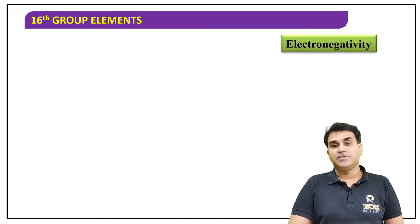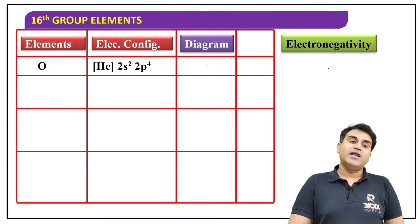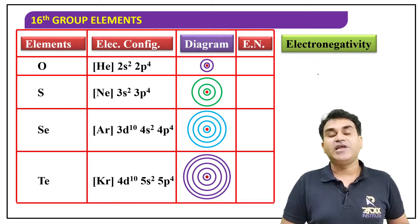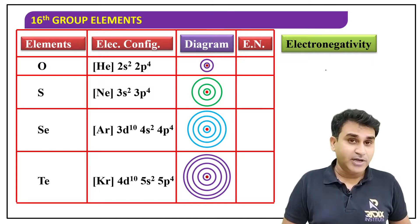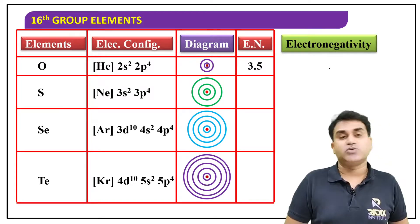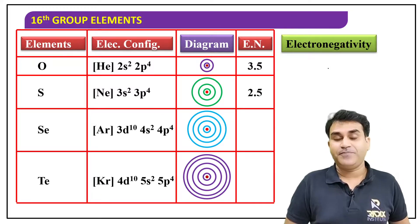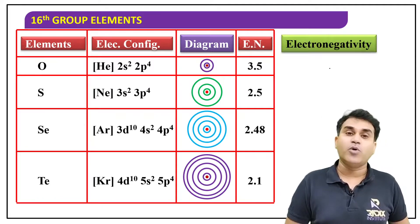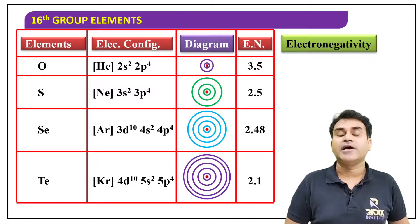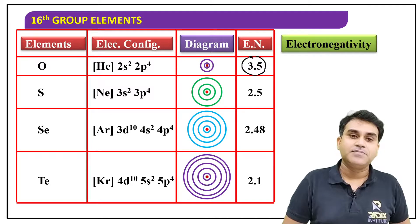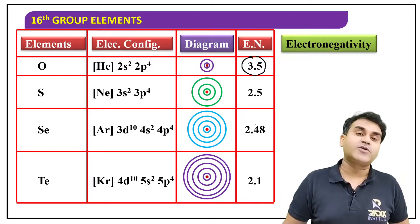Due to half-filled orbital stability. Electronegativity values: down the group, size increases so electronegativity decreases. Oxygen's electronegativity is the second highest in the entire periodic table at 3.5. After that, a sharp decrease to sulfur at nearly 2.5. Selenium is almost the same at 2.48. Tellurium is much less at 2.1.